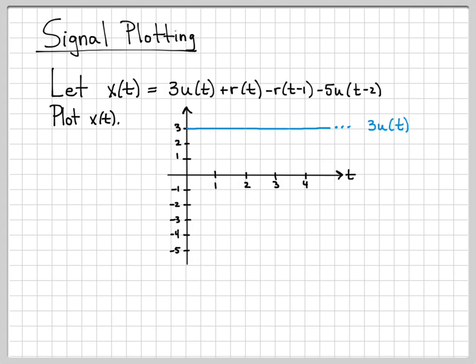The next term in our expression for x(t) is r(t). And we know what that looks like. That is a ramp signal that starts at time 0 and has a slope of 1 for all time. So r(t) ramps up and just continues as a line for all time with slope 1.